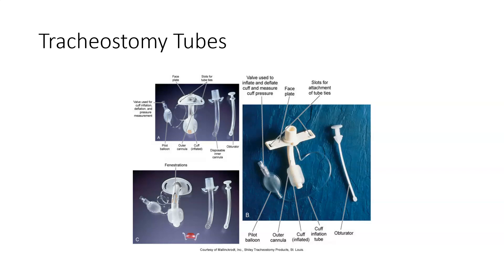There are all kinds of different trache tubes — I'll be bringing some to class so we can look at them, and we'll have them in the skills lab. There are fenestrated tubes, tubes with a face plate where your ties go, and some that are cuffed and some that are not cuffed. We'll be taking the time to look at all of those in the lab.